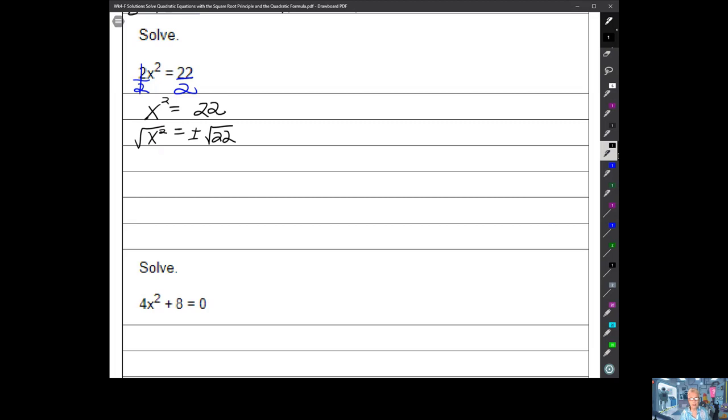The square root of x² equals plus or minus the square root of 22. Now is there a perfect square in 22? If this were 20, we would have a 4. But no, there isn't. So I don't have to simplify this. It's enough to say x equals negative the square root of 22, comma positive the square root of 22. And that is what you would write in your answer box. Piece of cake.